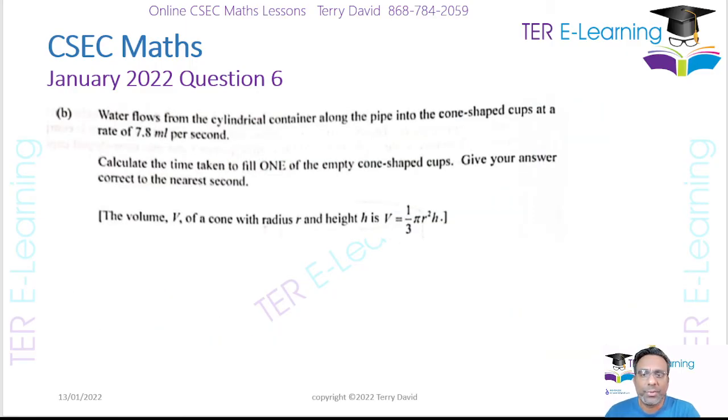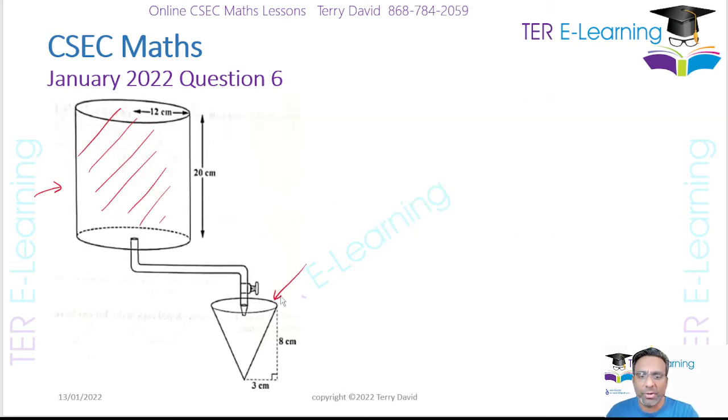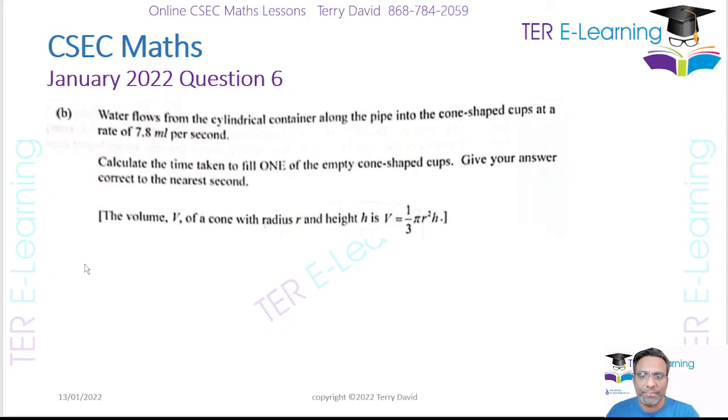Part b: water flows from the cylindrical container along the pipe into cone-shaped cups at a rate of 7.8 milliliters per second. Calculate the time taken to fill one of the empty cone-shaped cups. We need to find the volume of this cone-shaped cup. They said the vertical height is 8 and the radius is 3 cm. The volume is ⅓πr²h, so that's ⅓ multiplied by 3.14 multiplied by the radius 3 cm squared multiplied by the height which is 8.